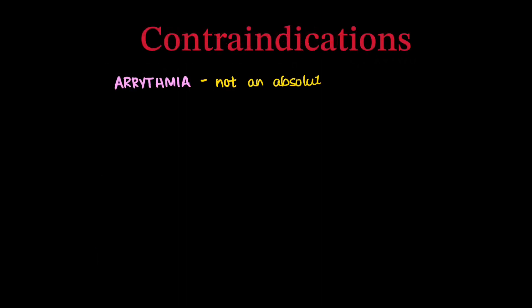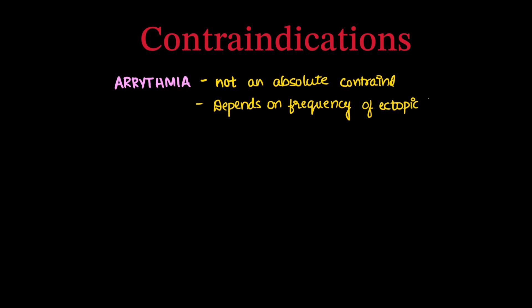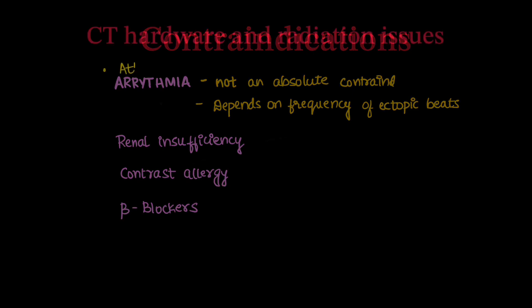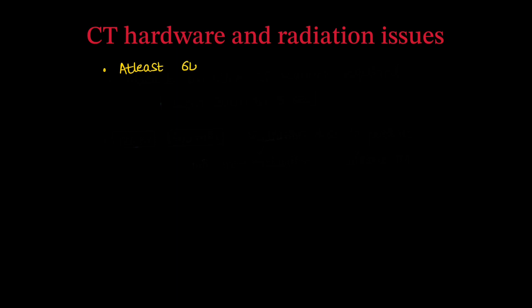Contraindications for triple rule out CT include arrhythmia — though this is not an absolute contraindication and depends on the frequency of ectopic beats — renal insufficiency, contrast allergy, and current use of beta blockers.